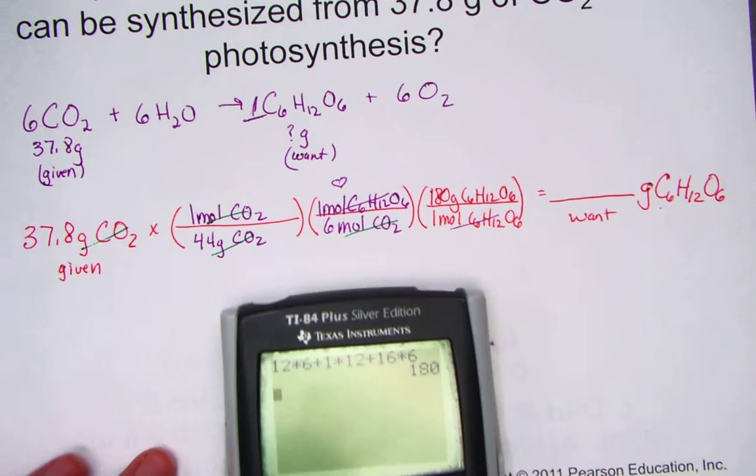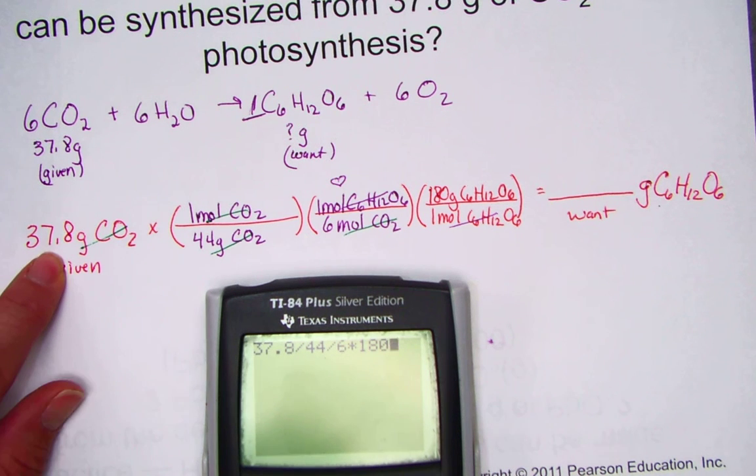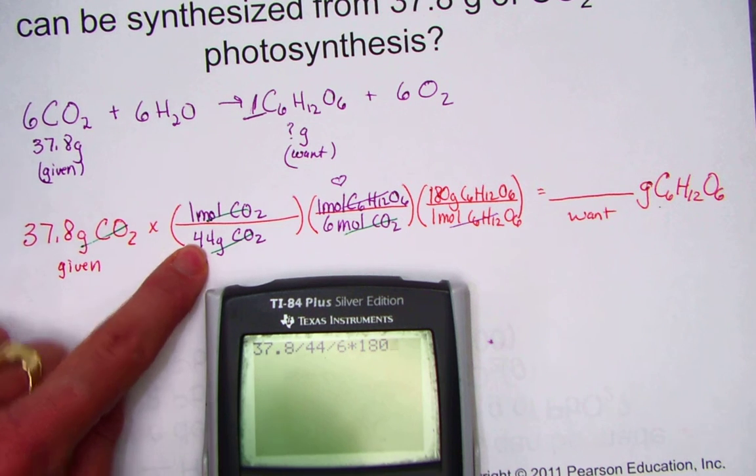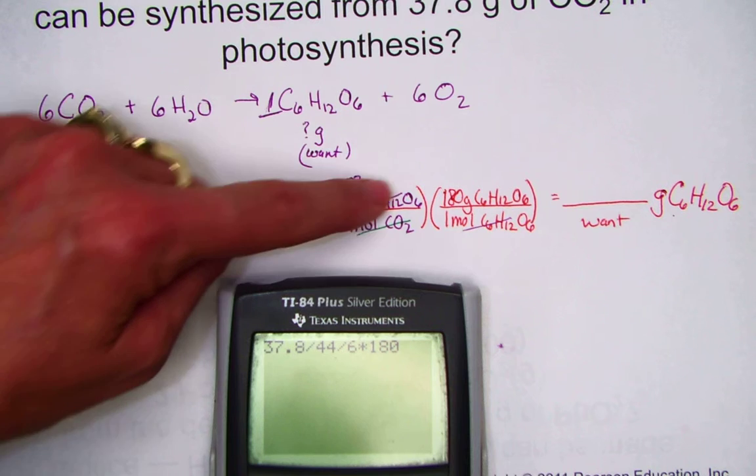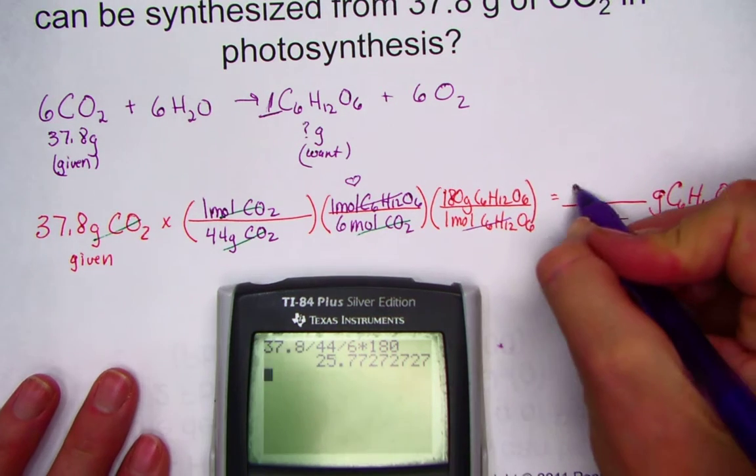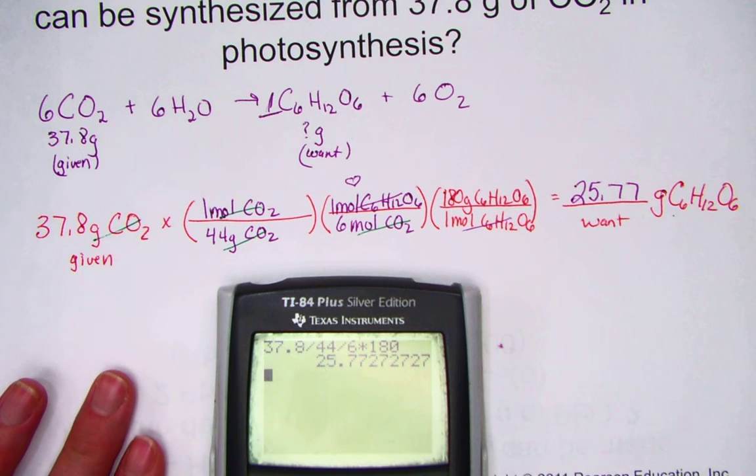Last thing we'll do is hit and find our answer. 37.8 divided by 44, divided by 6, times 180. 37.8 times 1 over 44, times 1 over 6, times 180 over 1. And when I hit that out, I find a screen that says 25.77 grams of glucose.